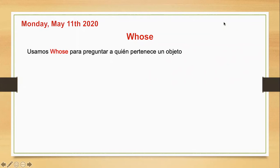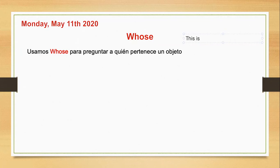Y si nos acordamos, el posesivo sajón era una apóstrofe más la S — apostrophe S — que le colocamos al nombre de una persona para decir a quién le pertenece algo. Por ejemplo, podríamos decir: this is Sam's book. Este es el libro de Sam. Esta apóstrofe y esta S me representaban posesión — es decir, me decían que el libro le pertenece a Sam.